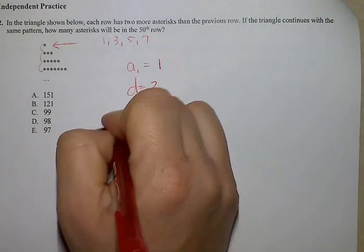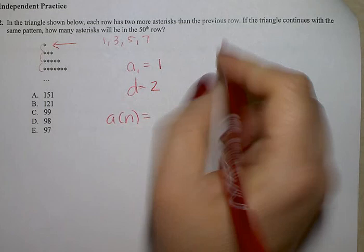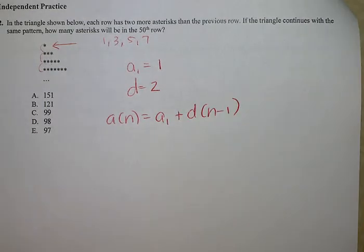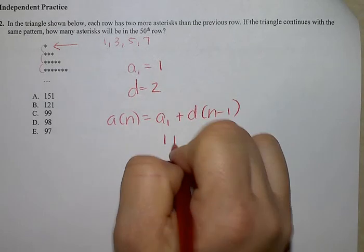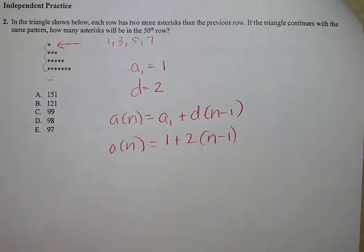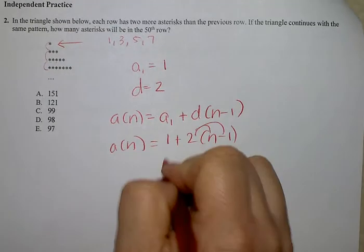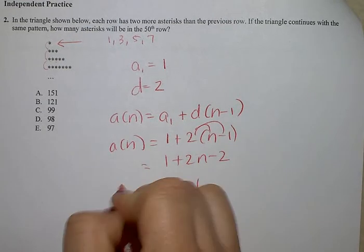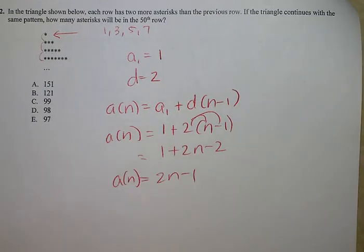The general equation for an arithmetic sequence looks like this. So I'm now going to replace a sub 1 and d with the following numbers. And I'm going to distribute the 2 and combine like terms.